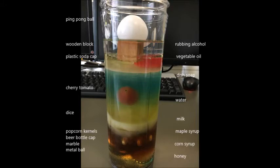Seen here is the multi-layer fluid column consisting of eight fluids and nine different object types submerged between the layers. From bottom to top: honey, corn syrup, maple syrup, milk, dish soap, water, vegetable oil, and rubbing alcohol were added and given a short amount of time to settle.